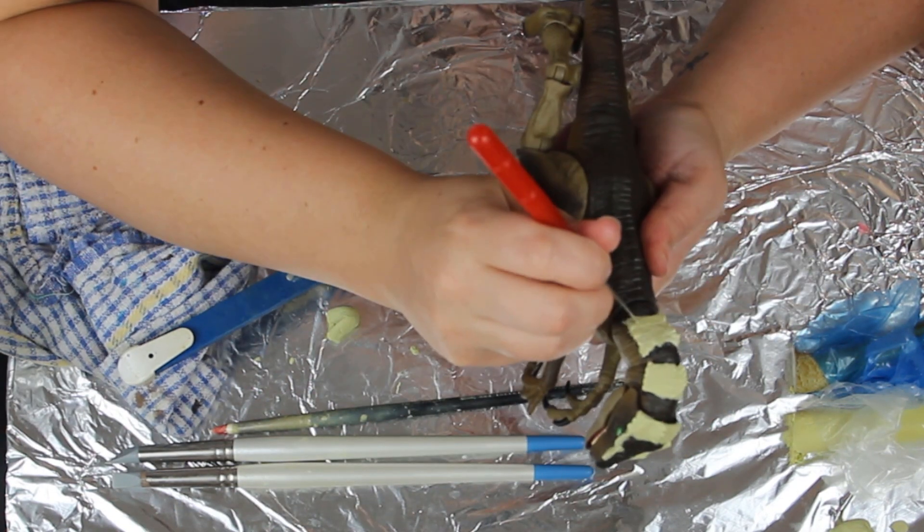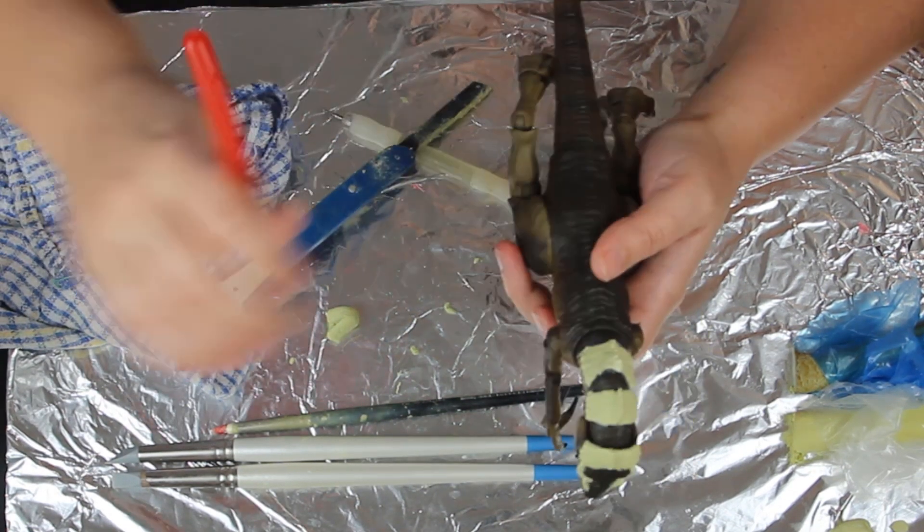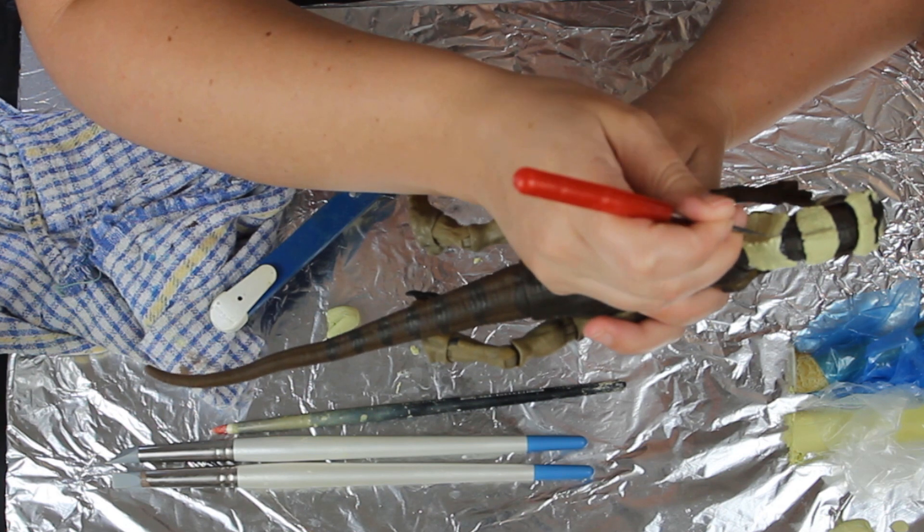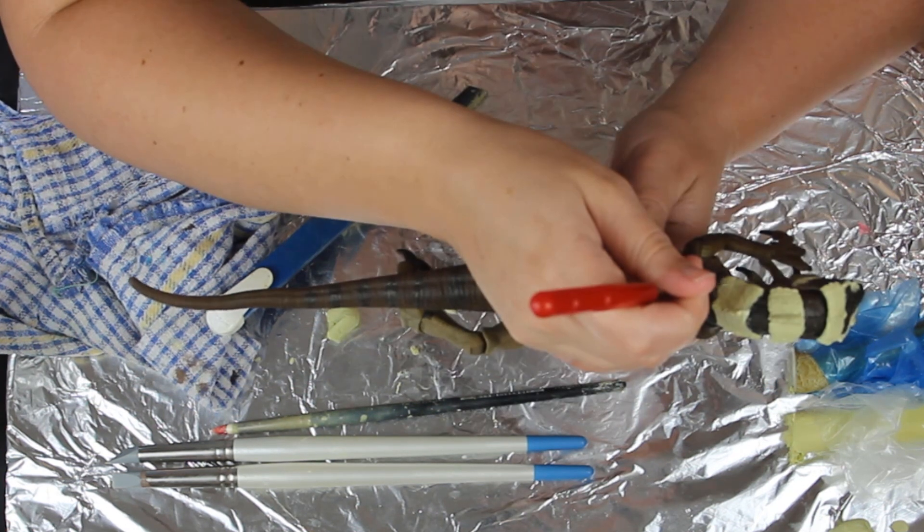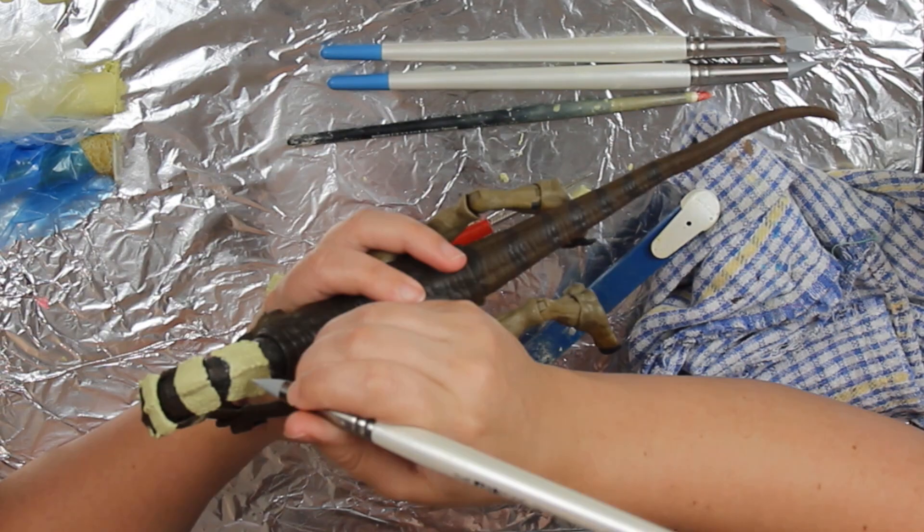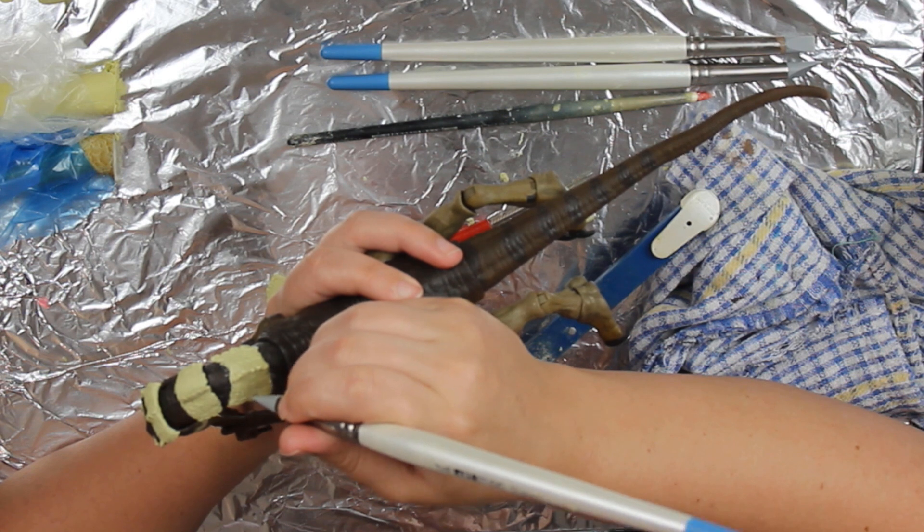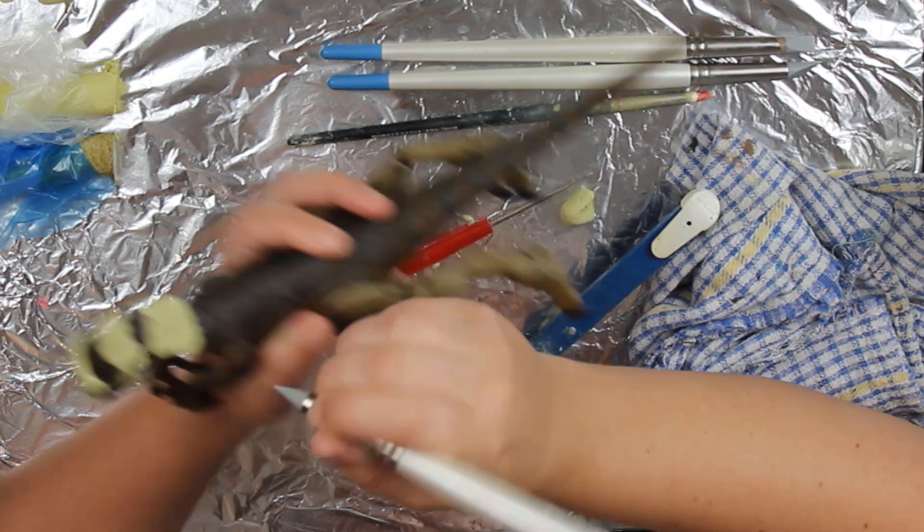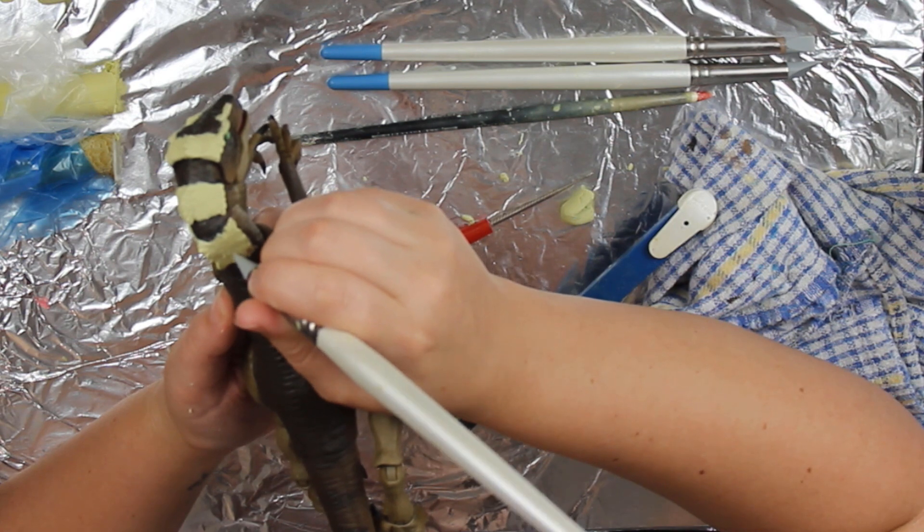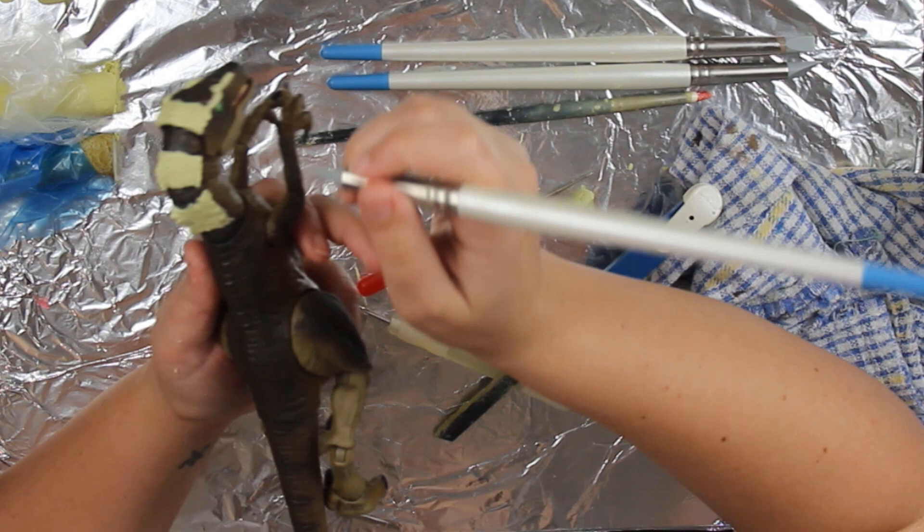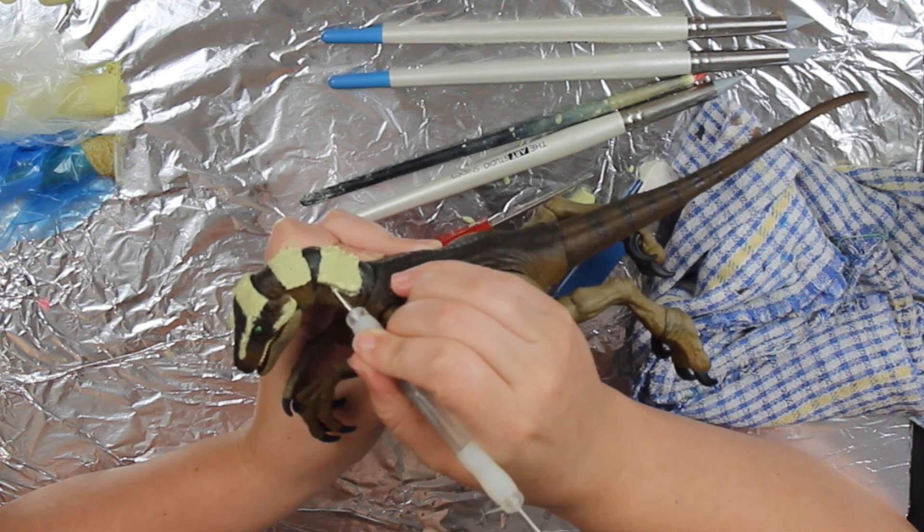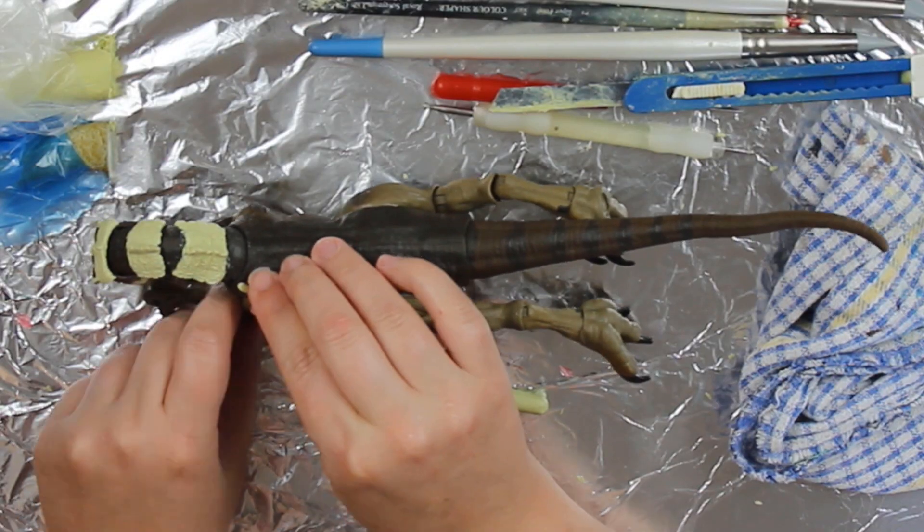Back to sculpting. I'm using my silicone tools here to push around the scale shapes and the different indentations in the joints. Silicone tools are really good for sculpting with epoxy putty because nothing really sticks to silicone, so the sticky epoxy putty doesn't stick too well to the silicone.